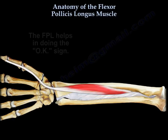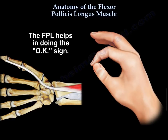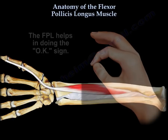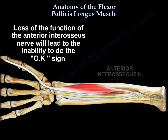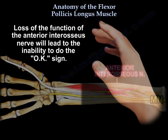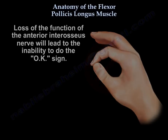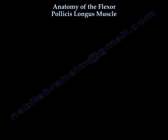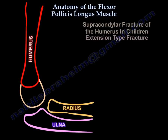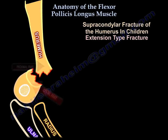The flexor pollicis longus helps in performing the OK sign. Loss of function of the anterior interosseous nerve will lead to inability to do the OK sign. This can be seen in supracondylar fracture in children, especially the extension type.